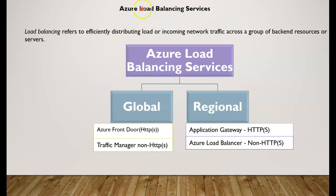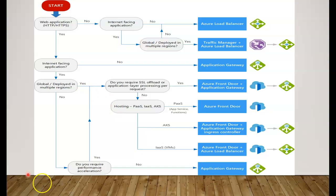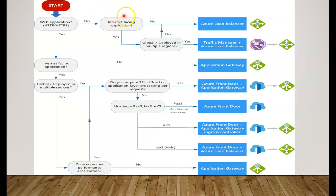With Azure load balancing services we have close to four different options. When it comes to the decision of which to use, consider whether you are developing a web application using HTTP or HTTPS. If it is an internet-facing application it goes one path; if it's a non-internet-facing application it goes another. You can also consider whether you want to route traffic directly based on TCP, UDP, or port-based mechanisms.